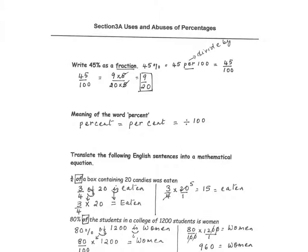Let's start with some basic ideas about percent. Suppose we need to write 45% as a fraction. 45% is equal to 45 per 100. The word 'per' translates to division in math, so 45 per 100 is the same as 45 divided by 100. So a percent can be converted to a fraction: 45 over 100.